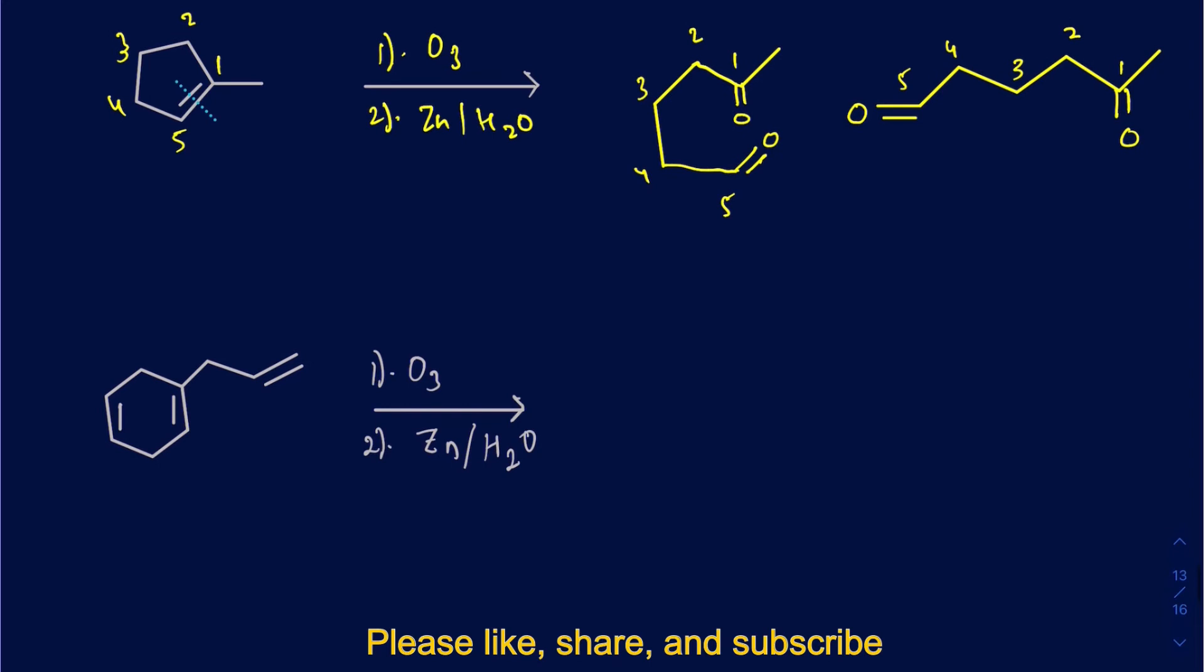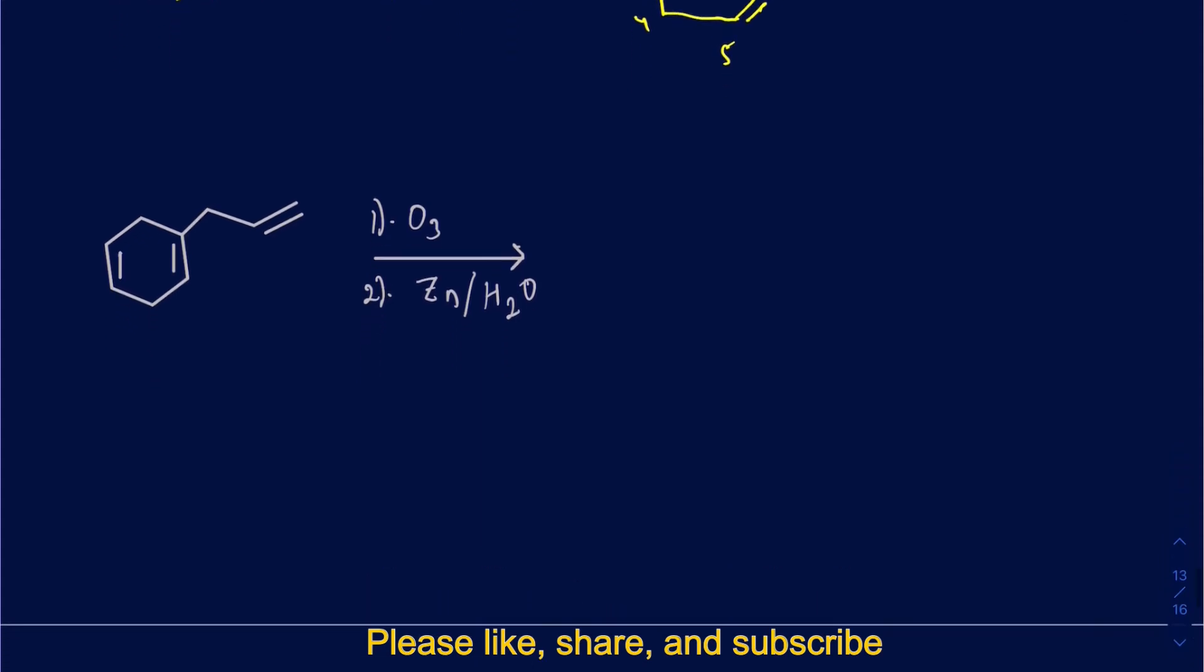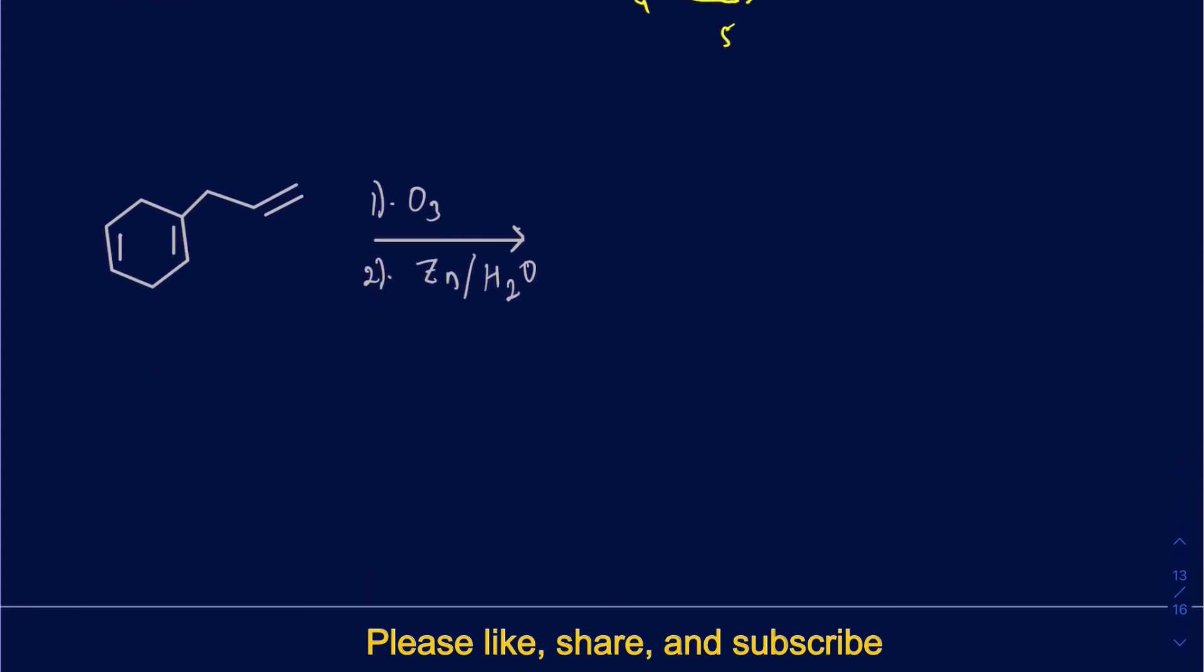If you have multiple double bonds, and that's going to be the case sometimes, as long as it's not aromatic, you should be able to break up the multiple double bonds as well. This one actually has multiple products being made. I can break it up right here, and then you can also break it up right there.